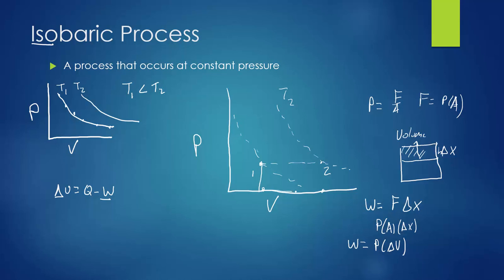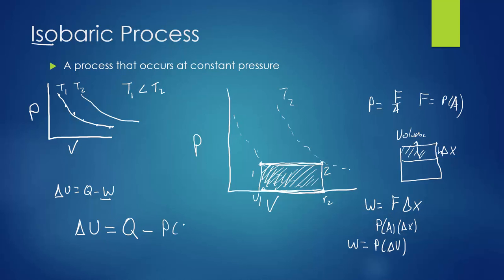Geometrically on the PV graph, this is just the area of the rectangle: the base is the change in volume from V1 to V2, and the height is the constant pressure along the isobar. So the area of that rectangle equals the work done. This lets us rewrite the first law as: ΔU = Q − PΔV. And importantly, the area under any pressure versus volume curve — regardless of shape — is always equal to the work done by the system.